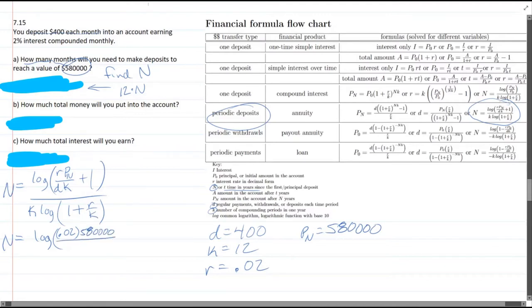Now divided by d is 400 times k is 12 plus 1, divided by k is 12 times log(1 plus 0.02 over k is 12).